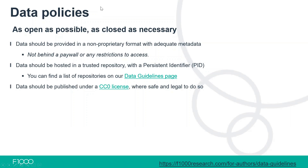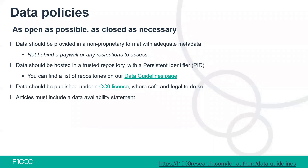We ask that data is published under a CC Zero license where it's safe and legal to do so, to ensure the openness of the data. The article must include a data availability statement — this must be included whether there is data associated or not. An article should also provide links between articles and datasets. We ask that data adheres to the FAIR data principles: findable, accessible, interoperable, and reusable.